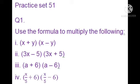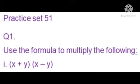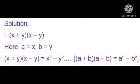Sum number 1: (x + y) into (x - y). In this example, the first bracket has x + y and the second bracket has x - y. The first and second terms are the same; only the sign is different — one is plus and one is minus. Therefore, for solving this, we use the formula (a + b)(a - b) = a² - b².